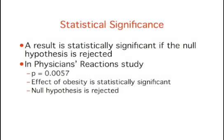When the null hypothesis is rejected, the effect is said to be statistically significant. For example, in the physician's reactions case study, the probability value is 0.0057. Therefore, the effect of obesity is statistically significant, and the null hypothesis that obesity makes no difference is rejected.